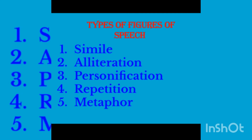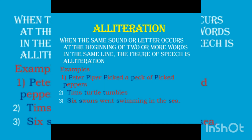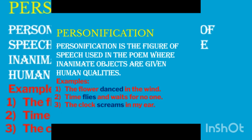Let me summarize all five figures of speech. First, simile: the word simile means likeness — a comparison between two different things which have something in common, always using 'as' or 'like.' Second, alliteration: the same sound or letter occurs at the beginning of two or more words in the same line. Third, personification: a figure of speech where inanimate objects — non-living things — are given human qualities.